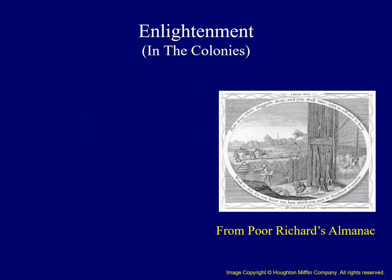In the colonies, the Enlightenment was popular among the most educated and therefore wealthiest Americans. A great example of this could be Benjamin Franklin. He was born in Boston and then moved to Philadelphia and became a very successful printer. On the right, we see an image from Poor Richard's Almanac, which included proverbs and advice. He later concentrated his energies on promoting science and scientific discovery, and in 1743 founded the American Philosophical Society to encourage the actions of amateur scientists.